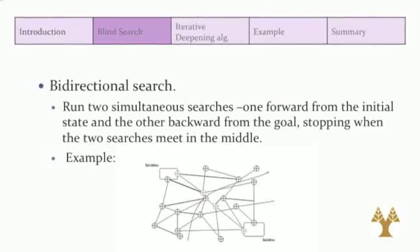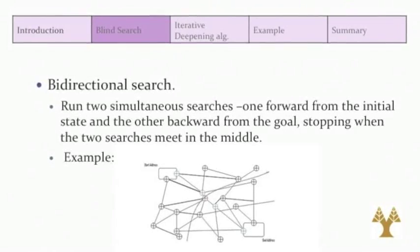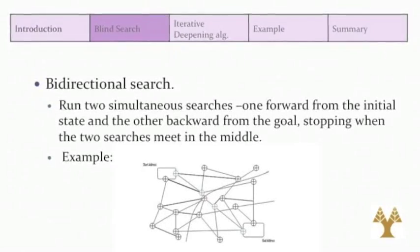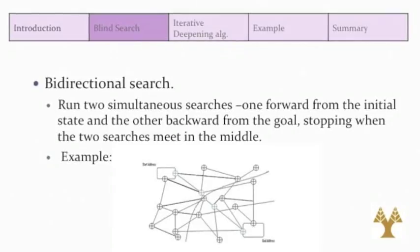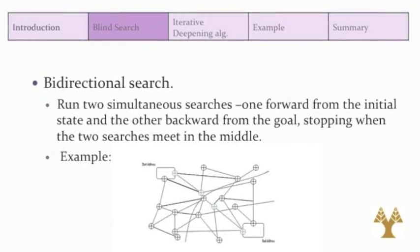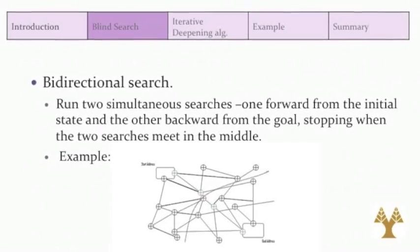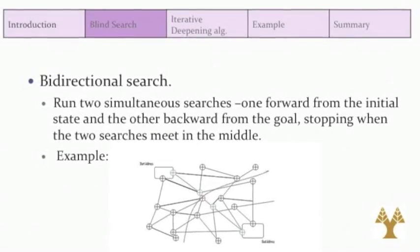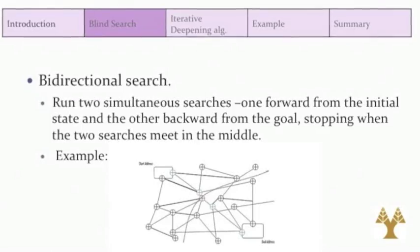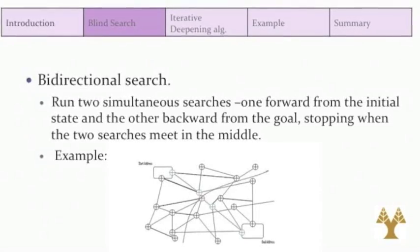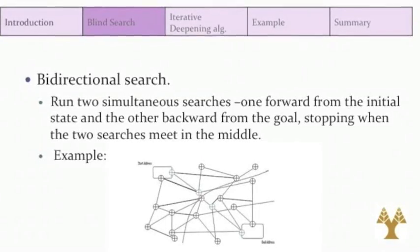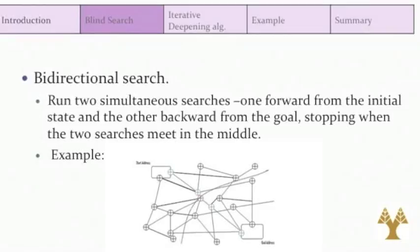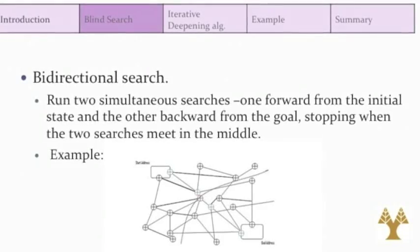Finally, the bidirectional search. The idea behind bidirectional search is to run two simultaneous searches — one forward from the initial state and the other backward from the goal — stopping when the two searches meet in the middle.